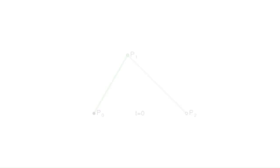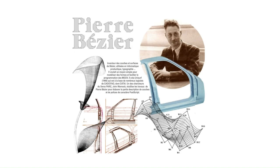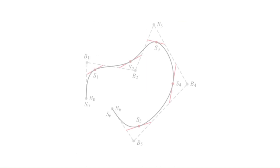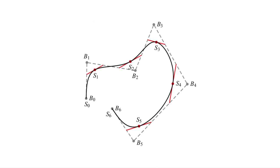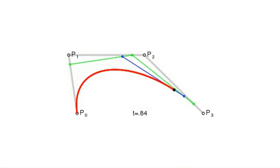A Bezier curve is a type of parametric curve that is used in computer graphics and animation to define smooth, continuous curves through a set of control points. Bezier curves are named after their inventor, Pierre Bezier, who used them to design car bodies at Renault in the 1960s. A Bezier curve is defined by a set of control points, which are points that lie on or near the curve itself. The number of control points determines the degree of the curve, with a higher degree producing a more complex curve.